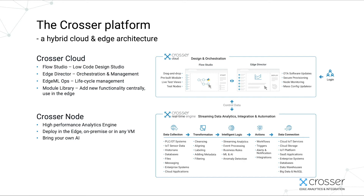The second component is the Edge Director, which is the node management tool. This is where you decide where to deploy the flows you've designed, define groups of nodes to operate on many nodes with single operations, and manage version control of flows — keeping track of what is running where. When you make updates, you can easily upgrade any number of flows running a certain version to a new version. We also have tools to manage other resources needed in edge nodes in addition to flows, such as machine learning models.